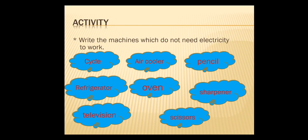Now let's move on to the activity. Write the machines which do not need electricity to work. Cycle. Air cooler. Pencil. Refrigerator. Oven. Sharpener. Television. Scissors.